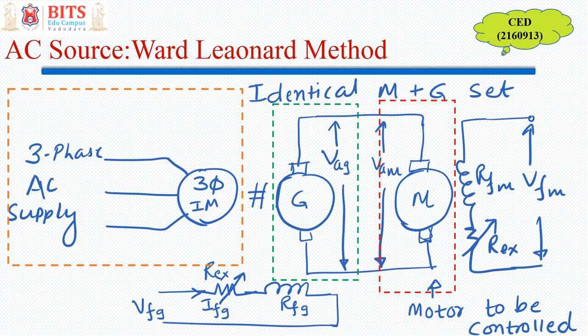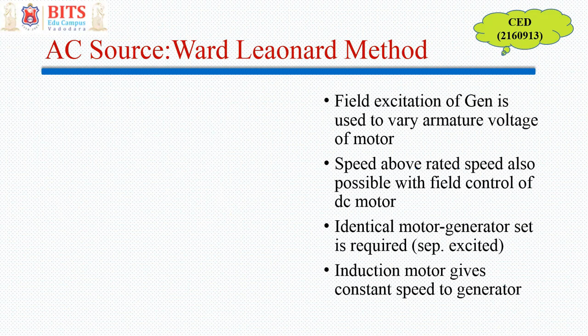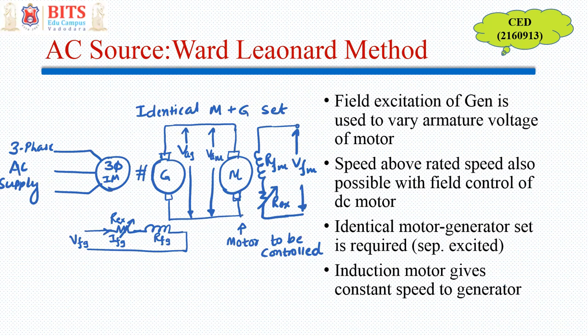In addition, we can have field control also, because this generator and motor are separately excited. The motor also has a field winding, so I can exercise field control if I wish to have speed above rated speed. The field excitation of the generator is used to vary the armature voltage of the motor, and speed above rated speed is also possible with field control of the DC motor.